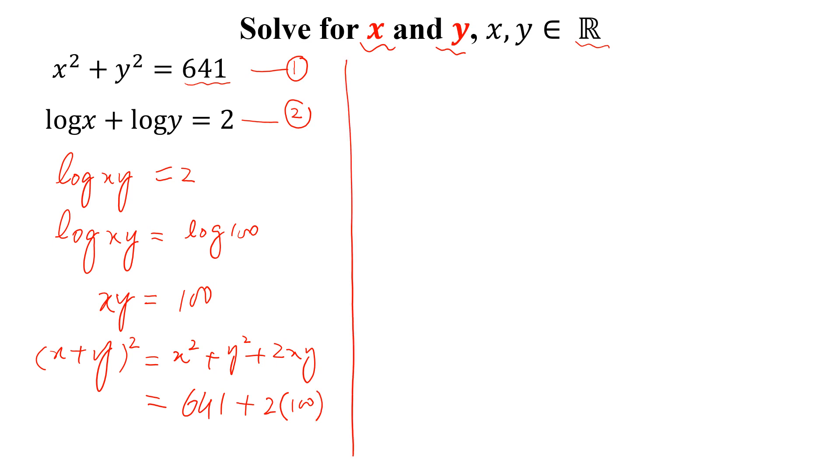So (x plus y) whole squared is equal to 841, and by taking the square root we can write x plus y equal to plus or minus 29. From the second equation we can say that x and y both are positive, so x plus y equals 29.